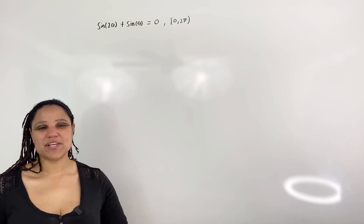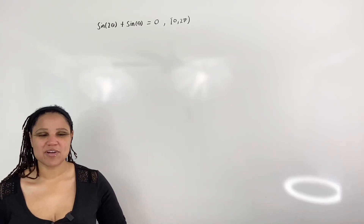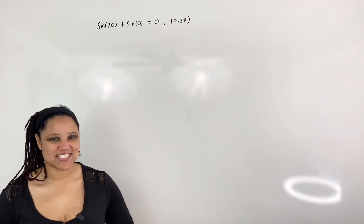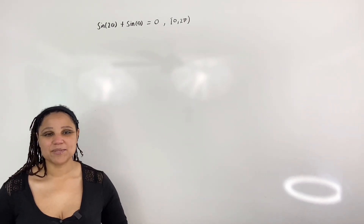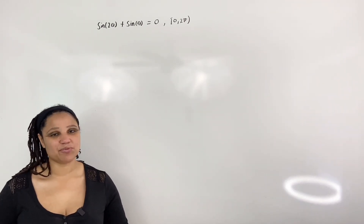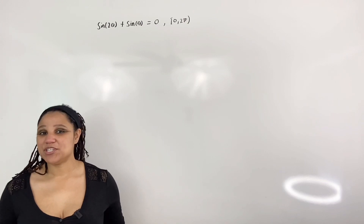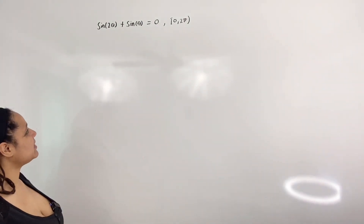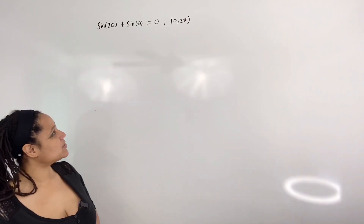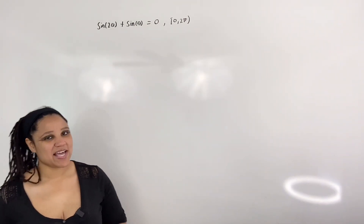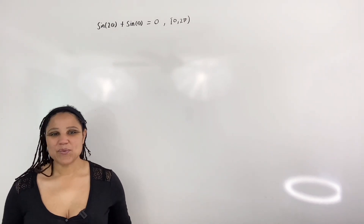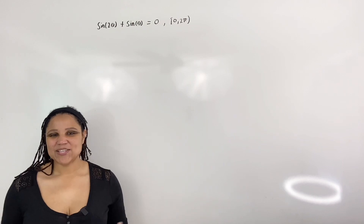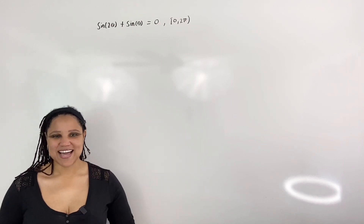In this video, we are going to use the sum-to-product identities to solve trigonometric equations. I have already proved the sum-to-product identities in a previous video, so be sure to check that out. In our example, we have sine of 2 theta plus sine of theta is equal to 0 on the interval between 0 and 2 pi, and we want to solve this trigonometric equation using the sum-to-product identities.